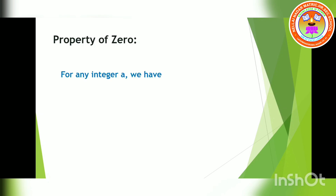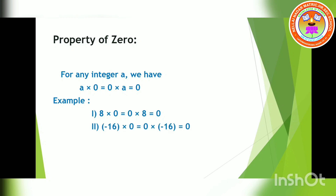Next, the property of zero. For any integer A, we have A into 0 or 0 into A gives back 0. That means any number multiplied with 0 gives 0 itself. Example: 8 into 0 or 0 into 8 equals 0. Also, minus 16 into 0 — whether it is plus or negative, it does not matter — when multiplied with 0, you get back 0 itself. This is the property of zero.